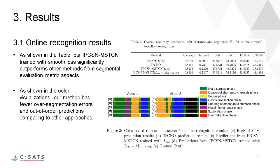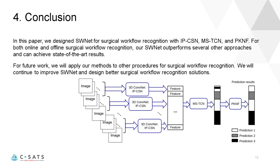For online recognition results, as shown in the table, our IPCSN MSTCN trained with smooth loss significantly outperformed other methods from segmental evaluation metric aspects. As shown in the color visualizations, our method has fewer over-segmentation errors and out-of-order predictions compared to other approaches.